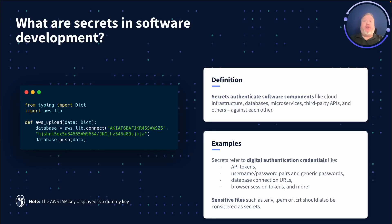As you likely know, the GitGuardian platform helps identify where your secrets appear in code and configuration files throughout your source control. These are the hard-coded credentials like username-password pairs, API keys, and certificates.